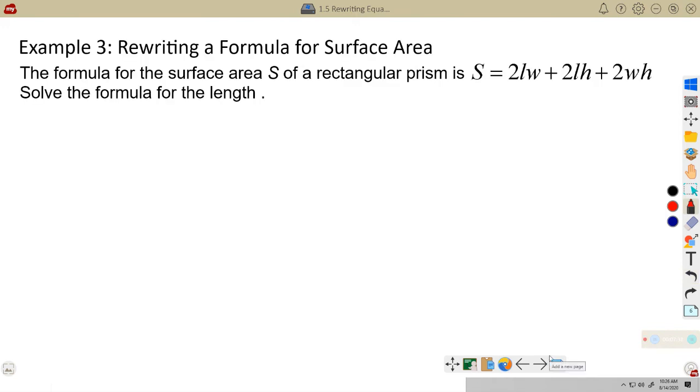Example three, rewriting a formula for surface area. So this is really the same kind of thing here because, again, we're just rewriting this, in this case, for a certain variable, in this case L, for the length here. So our formula for the surface area of a rectangular prism, S equals 2LW + 2LH + 2WH. I think those are right. We want to get the L by itself. So I have an L here and an L here. In case you can't read my writing, I have an L here and an L here. So this is going to require a couple steps, just like we just did. First thing I want to do is subtract the 2WH from both sides.